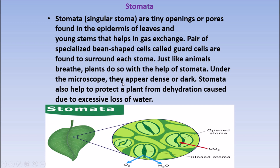Under microscope, stomata appear dense and dark. Stomata also helps to protect a plant from dehydration caused due to excessive loss of water. Jab garmi ke din hote hain, to stomata ke pores band ho jate hain jisse excessive water ka loss na ho. Fir jaise hi sunlight chali jati hai, pores khulte hain aur carbon dioxide air se absorb kar leta hai. Jab fir sunlight aayega, food ki process ke liye carbon dioxide use hogi. That is the stomata — that is in closed position, and here is open position.